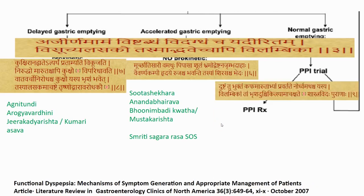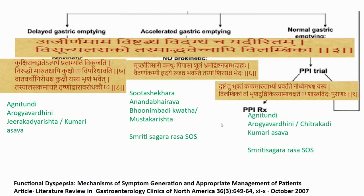Sometimes it can also result from stress — these kinds of symptoms could be stress related. In those cases, Smritsagara is also prescribed, which improves the condition. Duration of treatment in this condition would be longer than the Alasaka variety. The third variety is Vilambika — the typical description in the text: after consumption of food, the patient would feel the food neither moves up nor down. The patient may have urge for defecation but doesn't pass; may have urge for vomiting but is not able to vomit, with continuous discomfort. My prescription would be Agnitundi, Aragivarthini or Chitrakadi Vati. Chitrakadi Vati when there is more pain; Aragivarthini when there is more heaviness; and Kumaryasava.